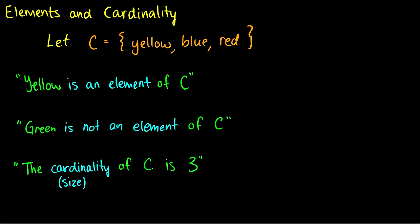So — elements and cardinality. Now we know what sets are and some common sets. We want to be able to talk about the things in those sets and how big those sets are. So I have C, a set containing yellow, blue, and red — the primary colors. Sets don't have to be all mathematics; they can be words too and have meaning in the real world. So I want to say something like: yellow is an element of C, meaning yellow is inside our set C.